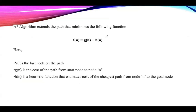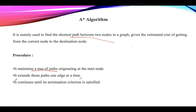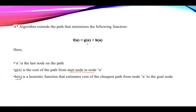A* uses the function f(n) = g(n) + h(n), where n is the last node on the path. g(n) represents the cost of the path from the start node to node n, and h(n) is the heuristic function that estimates the cost of the cheapest path from node n to the goal node.